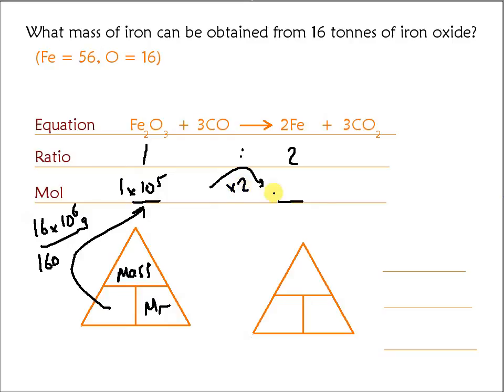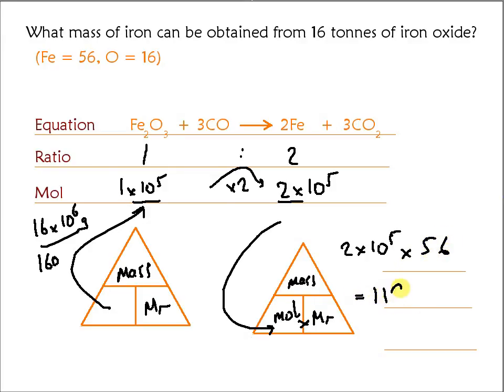Multiply that by 2 to get the amount of iron. So that's the amount in mole of the iron. We want to work out the mass, so take the mole and multiply it by the MR. That's 2 times 10 to the 5, multiply it by 56, which comes out as 112 times 10 to the 5 grams, or 11.2 tons.